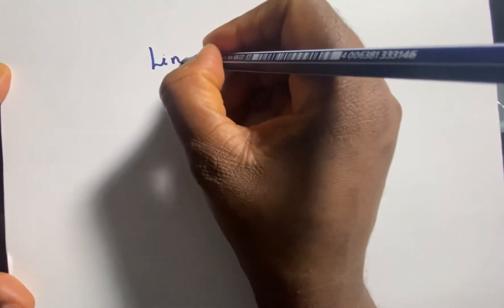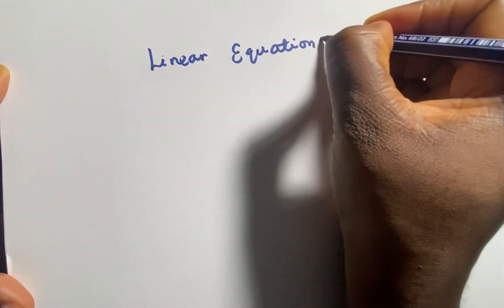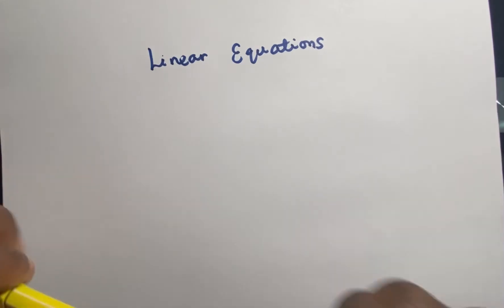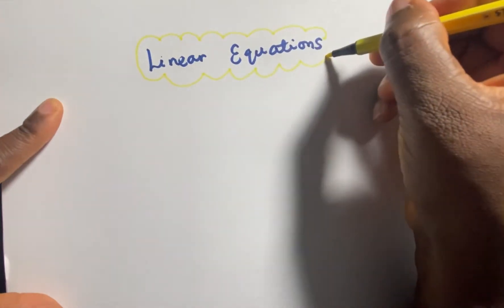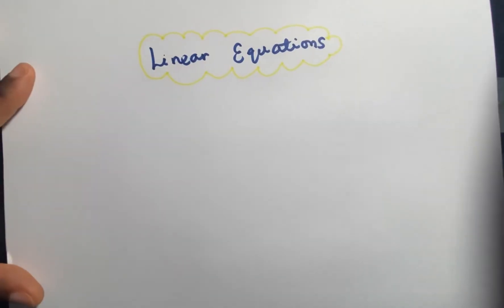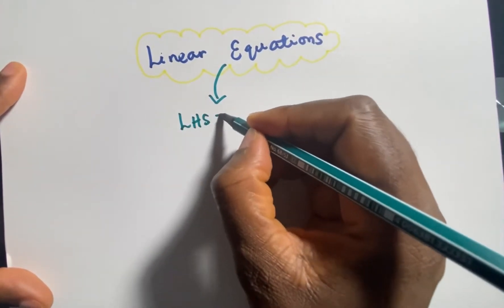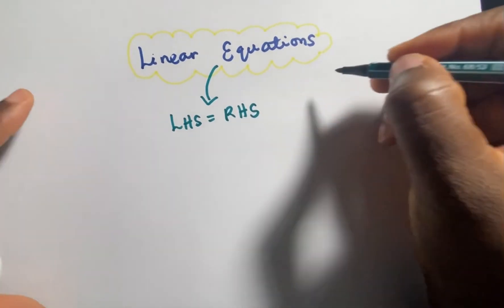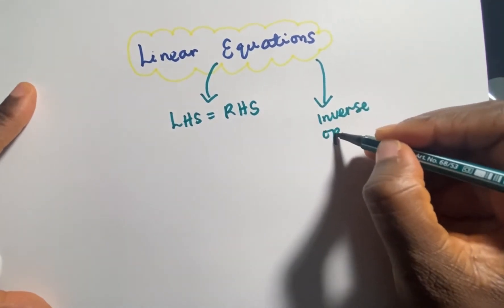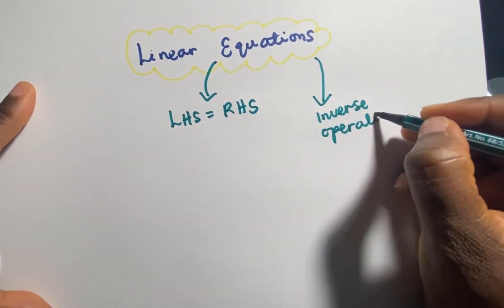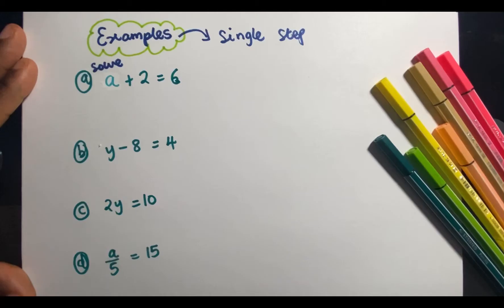Hello guys and welcome back. In today's video we're going to be looking at linear equations. Equations are all about balancing things up, so the main thing you have to bear in mind is that the left hand side has got to be equal to the right hand side. We're going to be using inverse operations to help us. If you haven't seen the video on transposing or rearranging formula, look in the NCC Foundation playlist — that will be very helpful in solving linear equations.